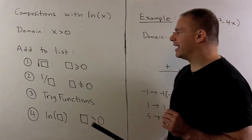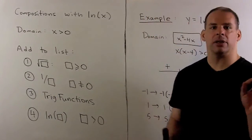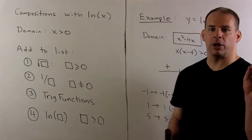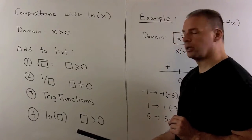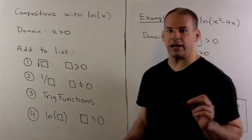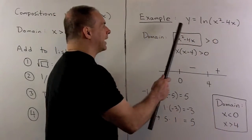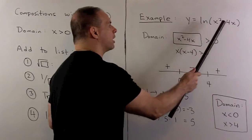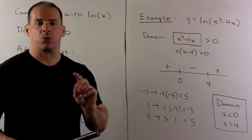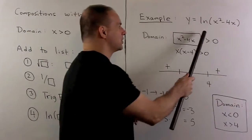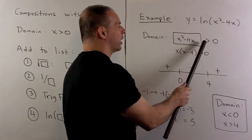Once you understand how to find the domain for something of the type square root of box, you pretty much understand what you need for natural log of box. Let's take a look at an example. We want to find the domain of y equal to natural log of x squared minus 4x. We take x squared minus 4x — that's what's in our box — and set it greater than zero.